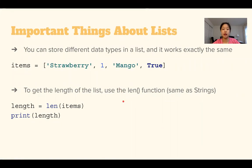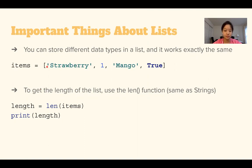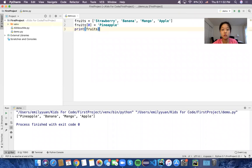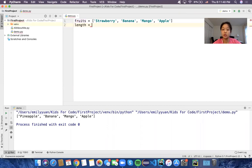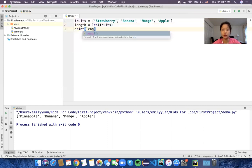An important thing about lists is that, unlike some other languages, you can store different data types in a list and it works exactly the same. For example, a list can store strings, booleans, ints, and floats all together. To get the length of a list we use the len() function, just like with strings. So len(fruits) returns 4, which we can store in a variable called length and print.